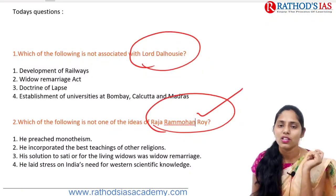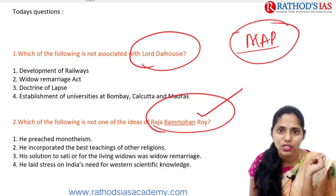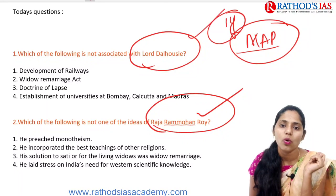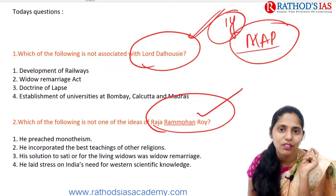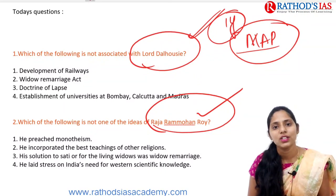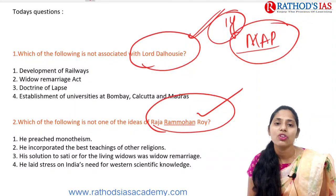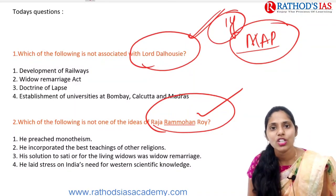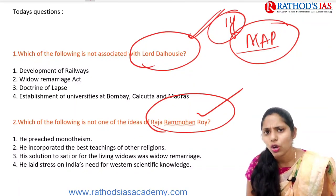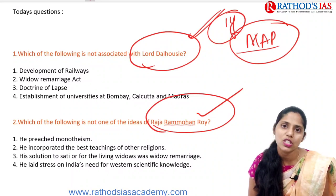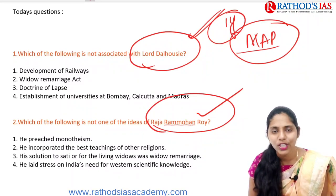Today's questions are about Lord Dalhousie and Raja Ram Mohan Roy — please read the options and give the correct answer in the comment box. Before concluding, a small announcement: Thoughts IAS is launching a mains answering practice course of one year. There will be weekly targets, daily one question to answer and submit via email for evaluation, one-to-one mentorship, and model answers, covering GS1, GS2, GS3, and GS4. The detailed schedule is in the description box.